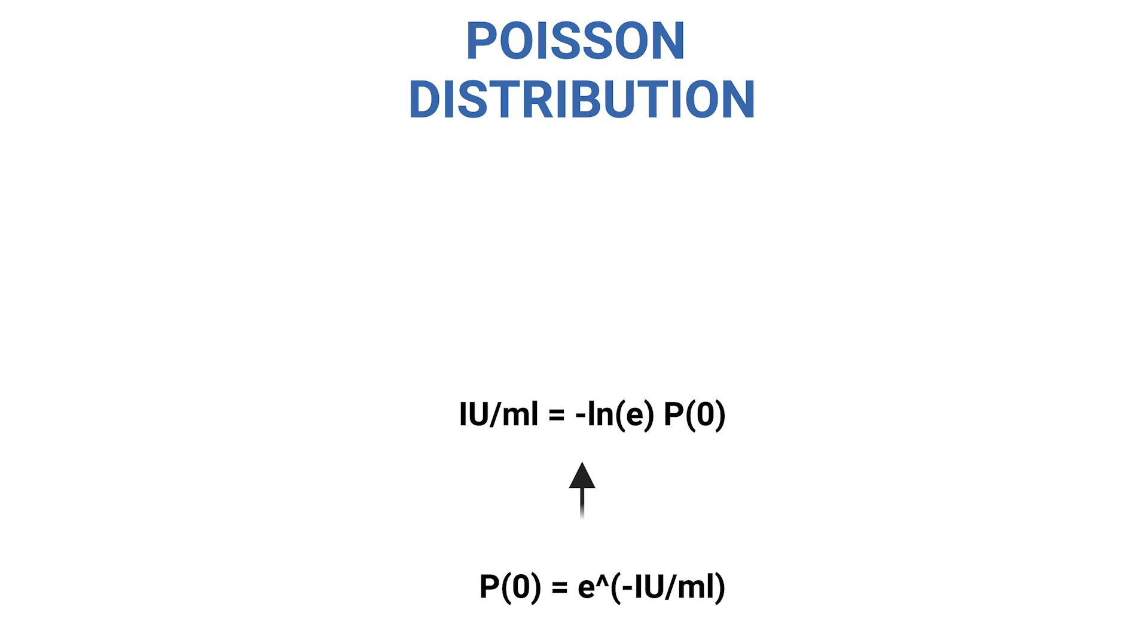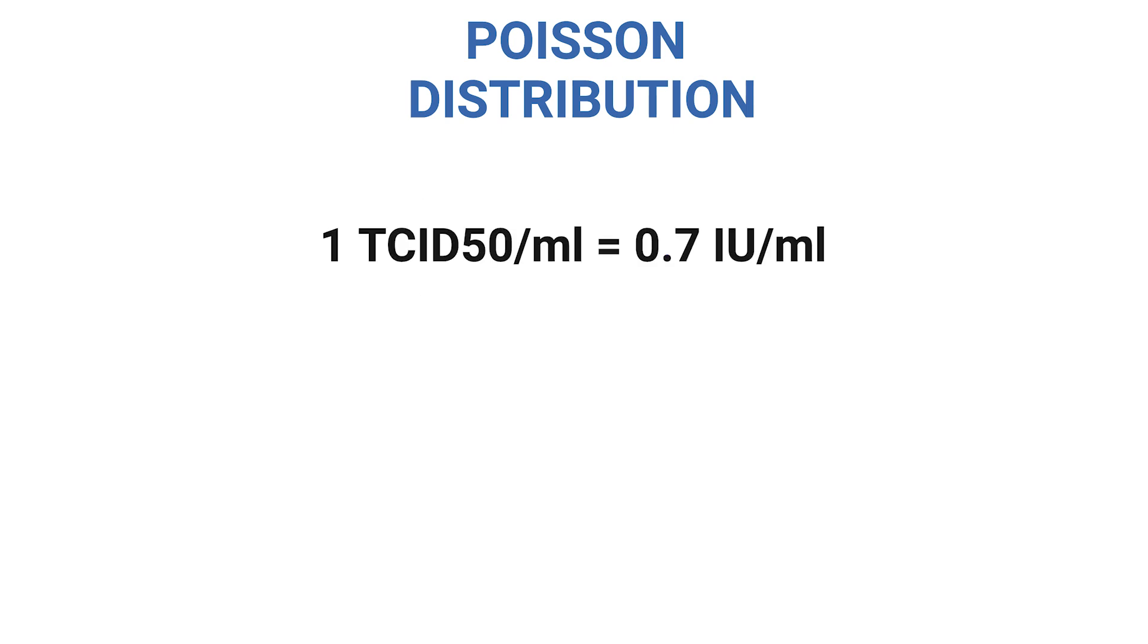So, when we have calculated our 50% infection rate in the TCID-50 assay, we know that this required 0.7 viruses per cell. So, we can simply say that one TCID-50 per milliliter corresponds to 0.7 infectious units per milliliter.